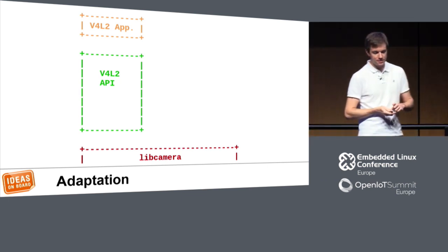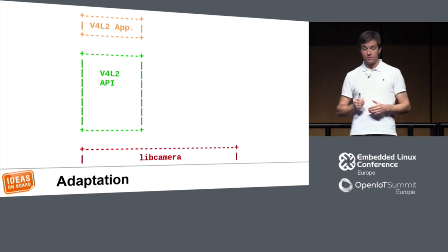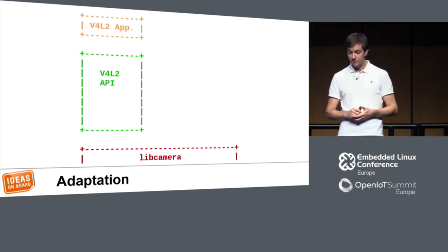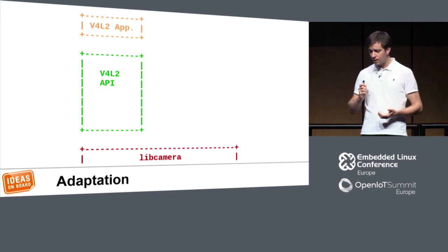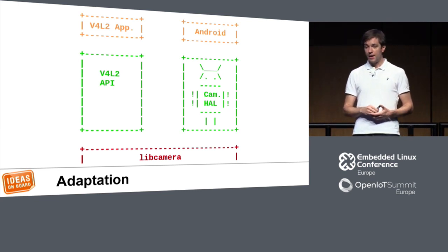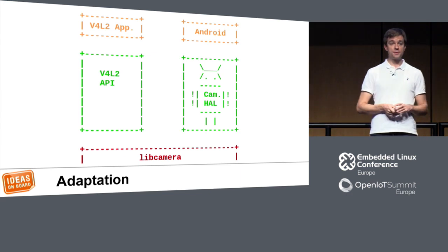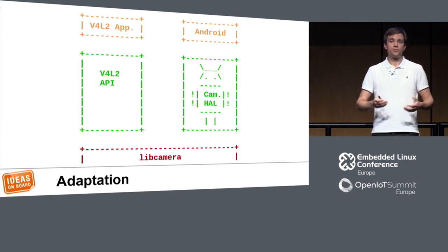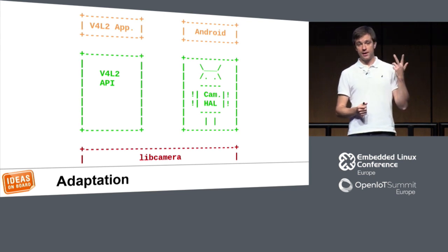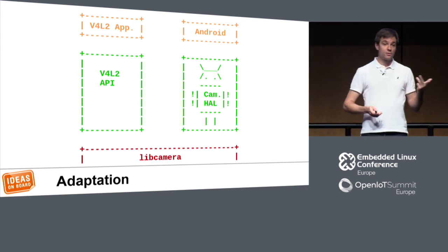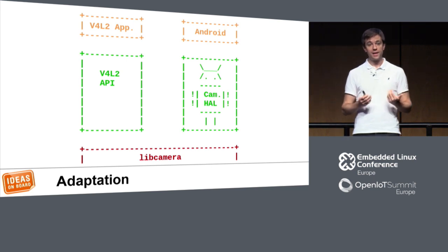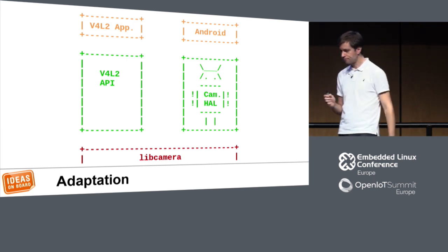As for the last features: I mentioned the adaptation layer — we want to support existing applications using existing APIs. So we'll have a V4L2 adaptation component, an Android Camera HAL implementation, and adaptation components for any framework of interest to the project. Initially: V4L2, Camera HAL, and GStreamer. If anyone in the future wants to support something else and contribute code, that will certainly be welcome. The framework will allow that via a module architecture where we can implement new components.